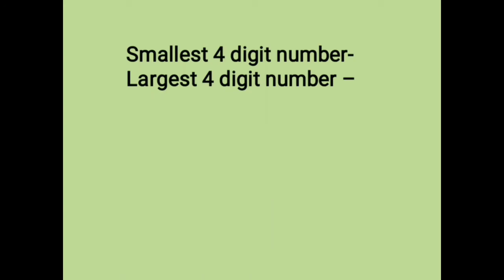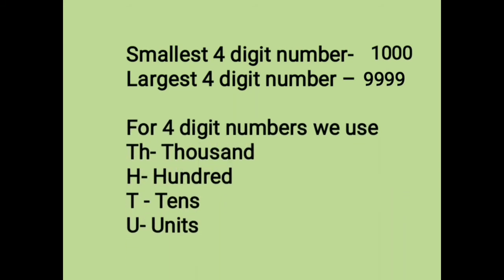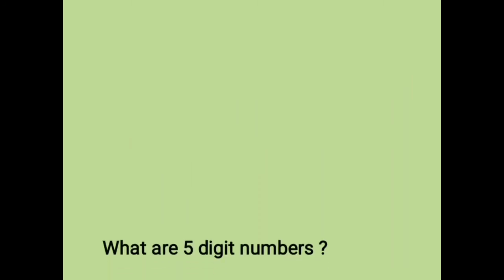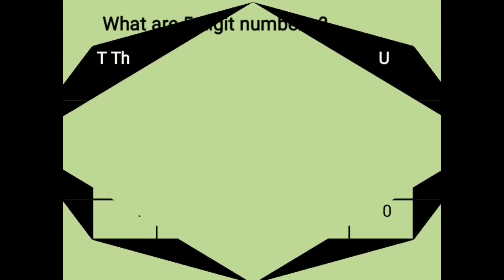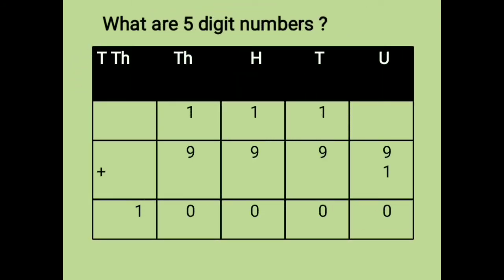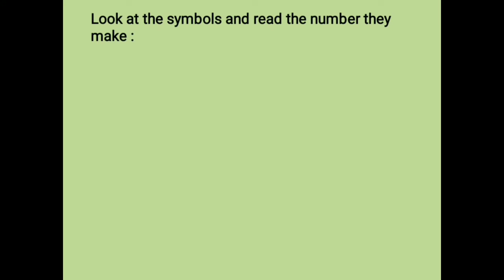Which is the smallest four-digit number? Yes, it is 1000. And which is the largest four-digit number? It is 9999. So for four-digit numbers we use TH for thousands, H for hundreds, T for tens, and U for units. What are five-digit numbers? If a number is given as 9999 and we add one to it, we will get 10,000, which is a five-digit number. Look at the symbols and read the number they make.